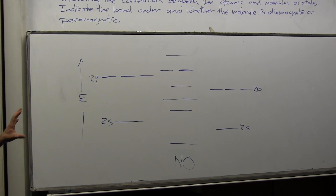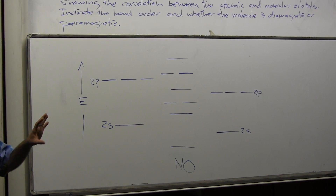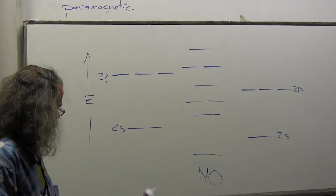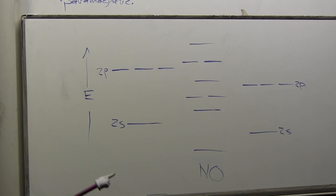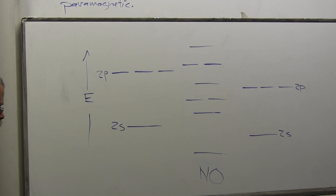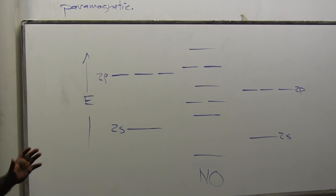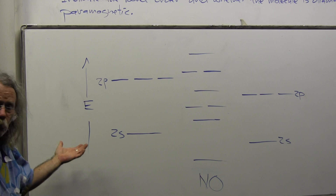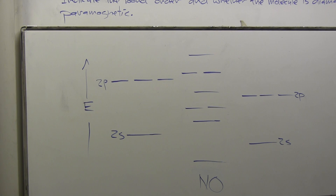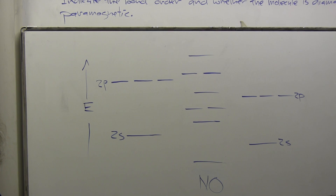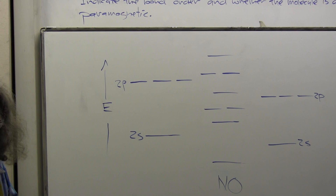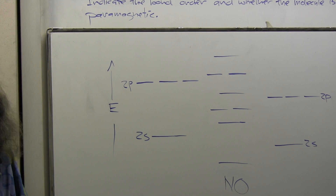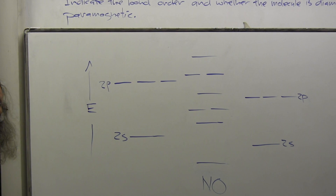The first thing we have to take into account is determining which set of atomic orbitals corresponds to nitrogen and which corresponds to oxygen. We have a set of atomic orbitals on the left and on the right. This is revealed when we consider the amount of work required to remove an electron from one of these orbitals, and we take into consideration the electronegativity of the elements. The more electronegative element will be lower lying in energy.